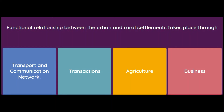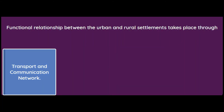Functional relationship between urban and rural settlements takes place through which means? Options: transport and communication network, transactions, agriculture, or business. The answer is through transport and communication network — this is how rural and urban settlements are connected.